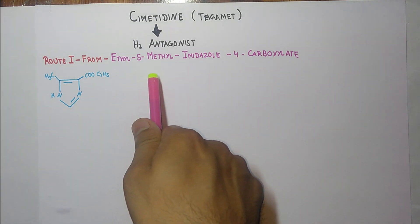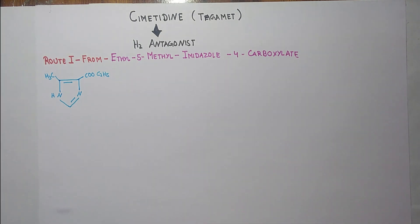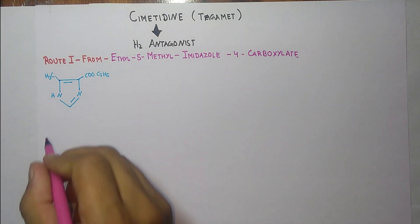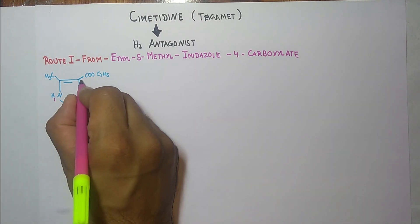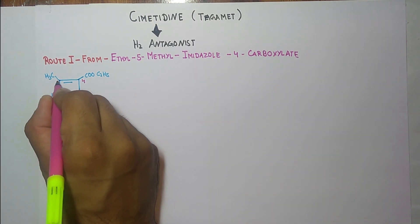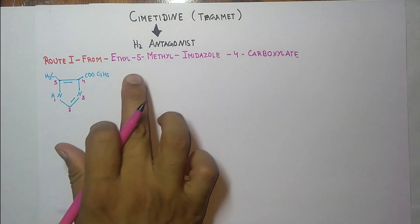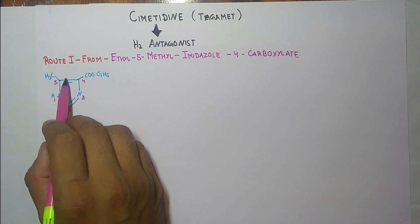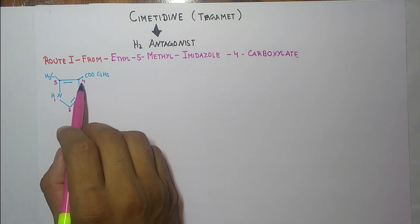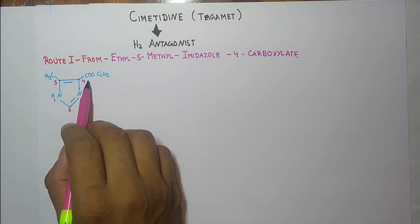This is the structure of ethyl-5-methyl-imidazole-4-carboxylate and the numbering starts from here. Ethyl-5-methyl-imidazole is this, this is a ring, imidazole, and at fourth position there is a carboxylate group.